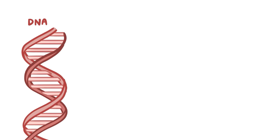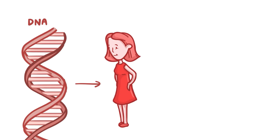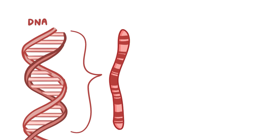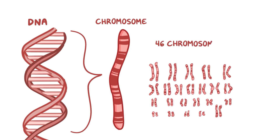Our DNA is like this humongous blueprint of information on how to make a human. Usually, this massive document is packaged up nicely into a storage bin called a chromosome. Usually, we have 46 chromosomes that we use to neatly organize all our information, depending on how you define organize.